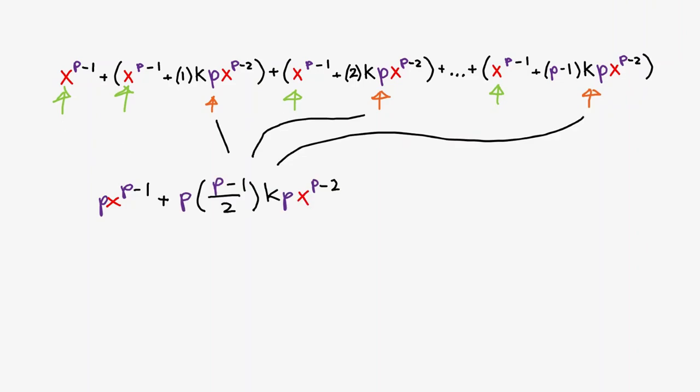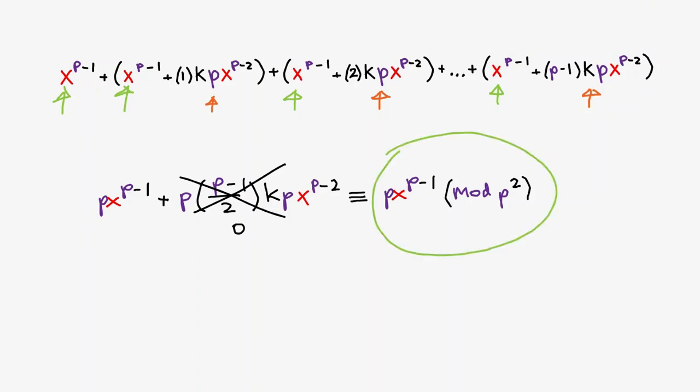Since p is odd, p minus 1 over 2 is an integer, which means this term is equivalent to 0 mod p squared. Looking at our simplified result, we see that it only has one factor of p, since it is not equivalent to 0 mod p squared, proving our claim and ultimately our base case.